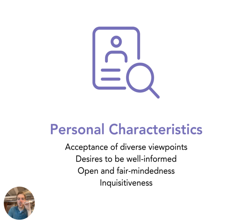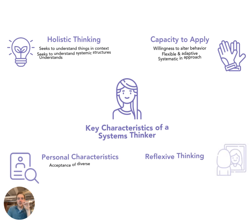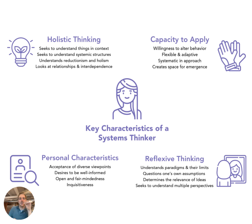Otherwise, you're not really going to explore it in the way that's needed. So just wanted to wrap up — those are the key characteristics of a systems thinker: thinking holistically, understanding reductionism and holism, being able to unpack your mental models, your capacity to apply this and alter your behavior, be flexible, and create space for emergence; reflexive thinking — questioning your assumptions; and personal characteristics — acceptance of diversity, open, fair-minded, inquisitive, and so forth. So I'm going to wrap up there, and I hope to talk to you soon.